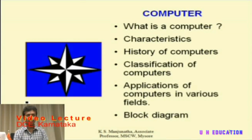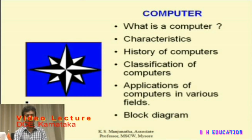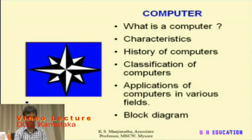Next, the history of computers — we will cover the evolution of computers, how the present computer has come into picture, and what are the major milestones or major changes that have taken place in the field of computer science. Finally, classification of computers — how computers are classified into different types based on various parameters. Next, the applications of computers in various fields, and finally a block diagram of the computer, showing the different functional units and how these units interact with each other.